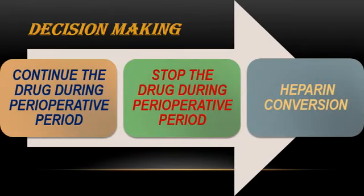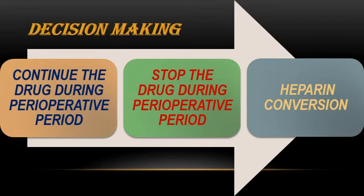We now face three options in decision-making: continue the anticoagulant during the perioperative period, stop the drug, or perform a heparin shift. Based on the literature, I recommend continuing the drug as long as the INR is within the therapeutic range. If not, we can stop the drug after performing baseline clotting profile and consulting the physician and hematologist, or proceed with heparin conversion if indicated.